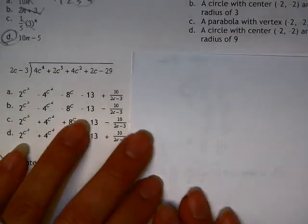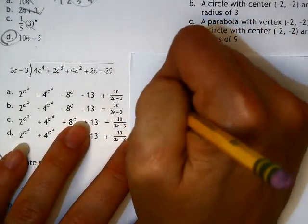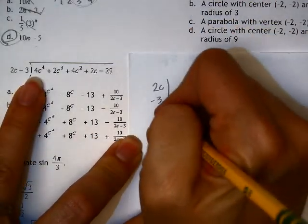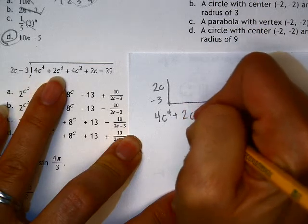All right, we have a division problem, which means I use the box. So 2c minus 3, 4c to the 4th plus 2c cubed plus 4c squared plus 2c minus 29.